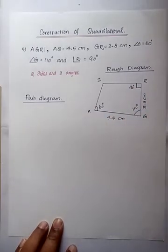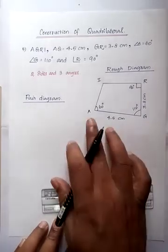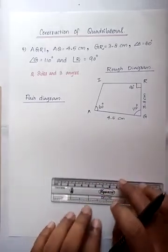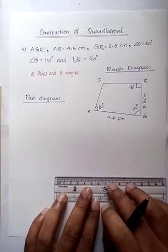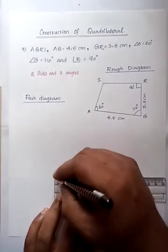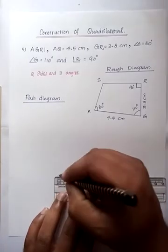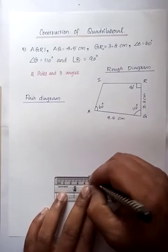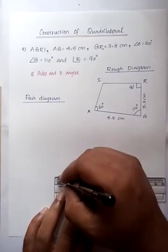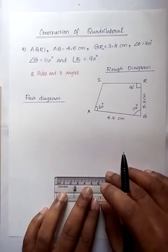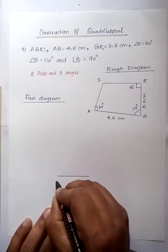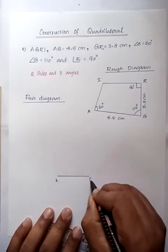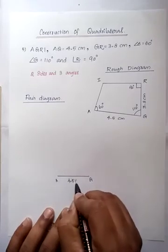First, we have to draw the base as usual. AG is equal to 4.5 cm. Starting point, draw a line for 4.5 cm. This is the base of quadrilateral, A to G, 4.5 cm.